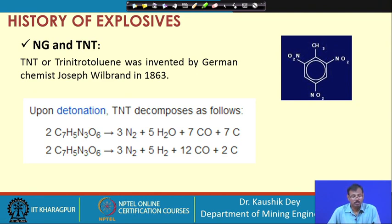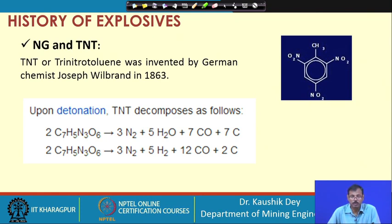Trinitrotoluene - TNT - was developed in 1863 by German chemist Joseph Wilbrandt. On explosion, TNT produces nitrogen, water, carbon monoxide, carbon dioxide, and unburnt carbon molecules, releasing huge shock. However, neither nitroglycerin nor TNT is sensitive to flame; they are sensitive to shock only. If shock is provided, these explosives can be initiated, but no one knew the technology to initiate them in a controlled commercial manner. The difficulty was that though the explosives were developed, how to use them was still not known.